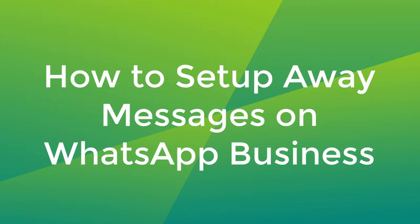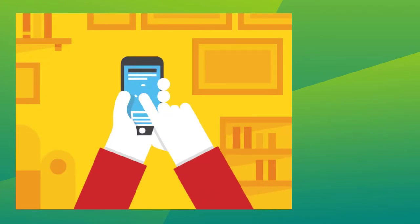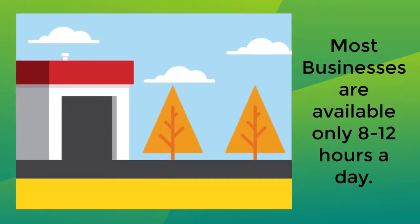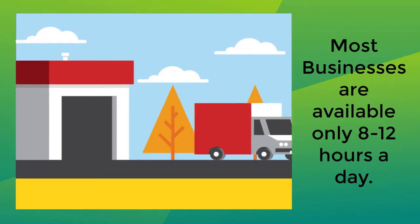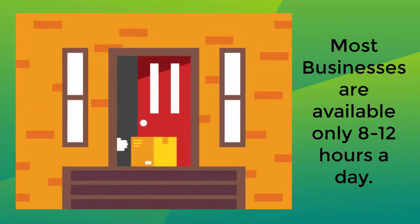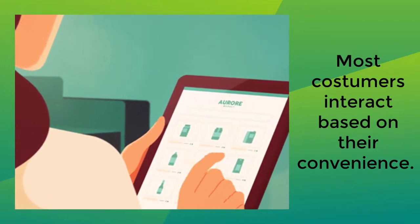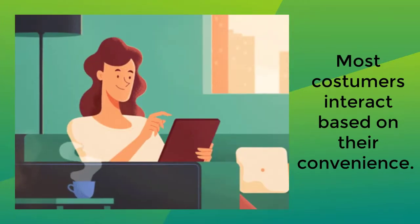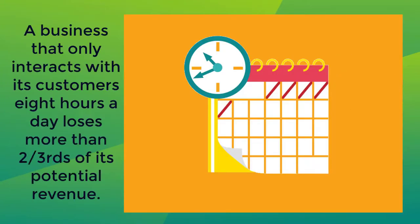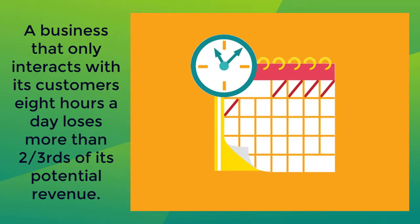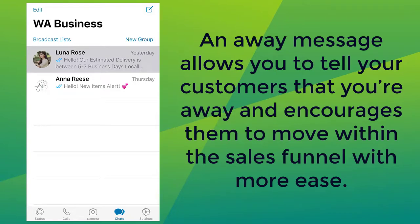Hello, today's video is about how to set up away messages on WhatsApp Business. Most businesses work 8 to 12 hours a day, so while you may only be available from 9 to 5, your customers will interact with businesses based on their convenience. Thus, these customers are lost revenue-generating opportunities. A business that only interacts with its customers 8 hours a day loses more than two-thirds of its potential revenue.